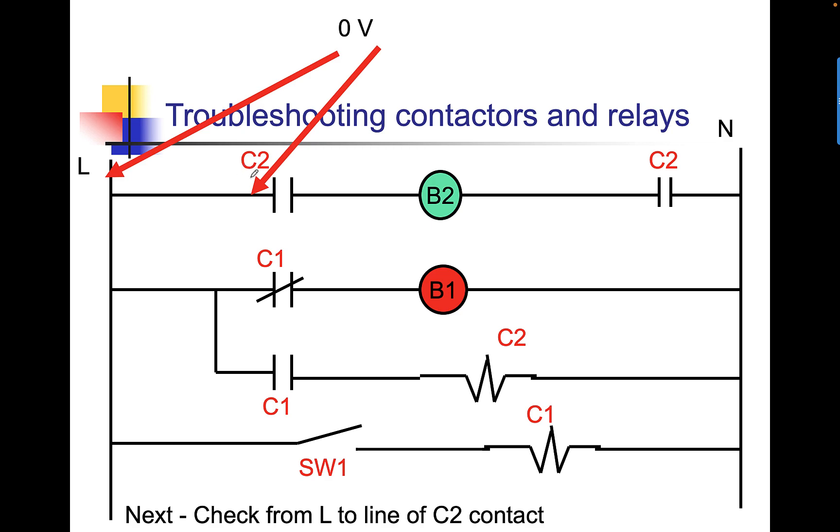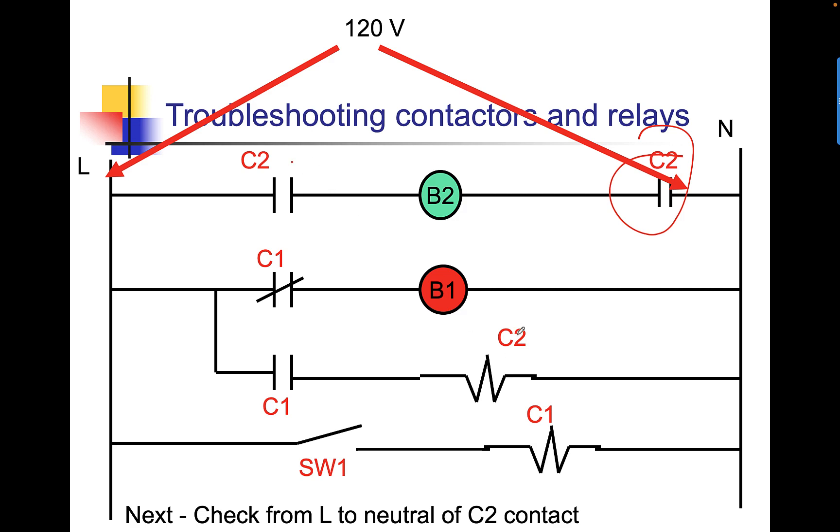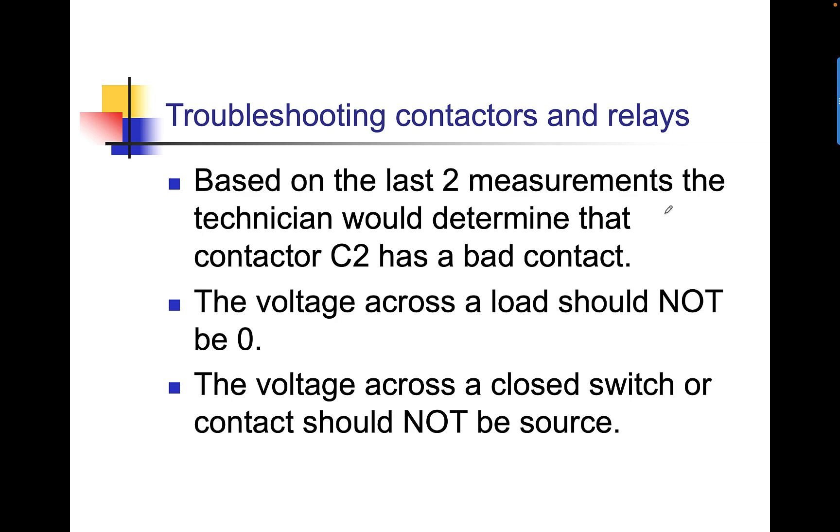Come to here. I have zero volts there. It tells me that wire is good. That tells me that the switch is closed. Zero volts across a switch tells me the switch is closed. Zero volts there. Now, wait a sec. I should have had voltage across a load. Should be what? Source, right? If we know that that's closed, I should have had source voltage in this position. But yet, I do have source here. We know what our issue is. This contact controlled by C2 is bad because the contacts are not closing. Based on the last two measurements, the technician would determine that the contactor C2 has a bad contact. The voltage across a load should not be zero. The voltage across a closed switch or contact should not be source.